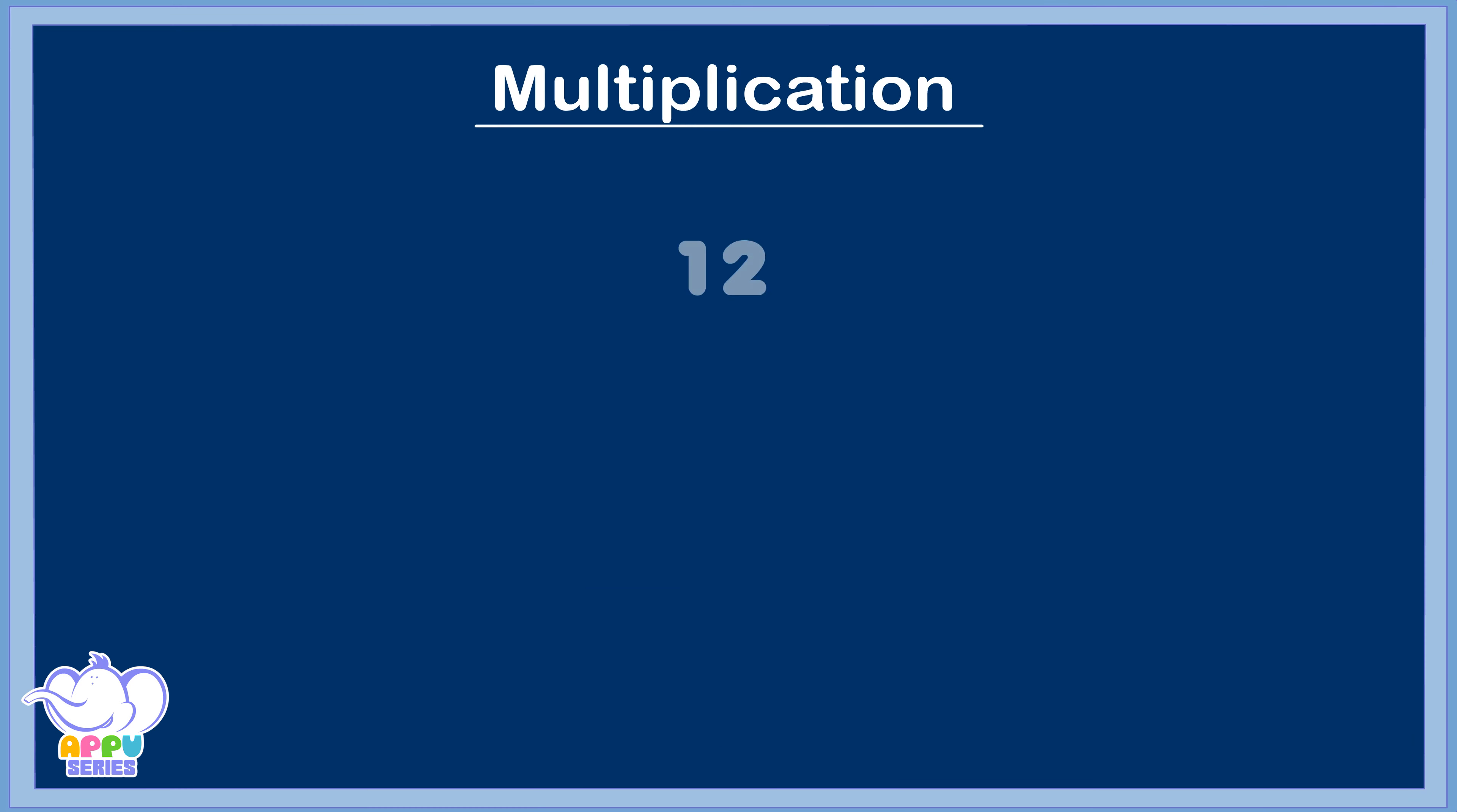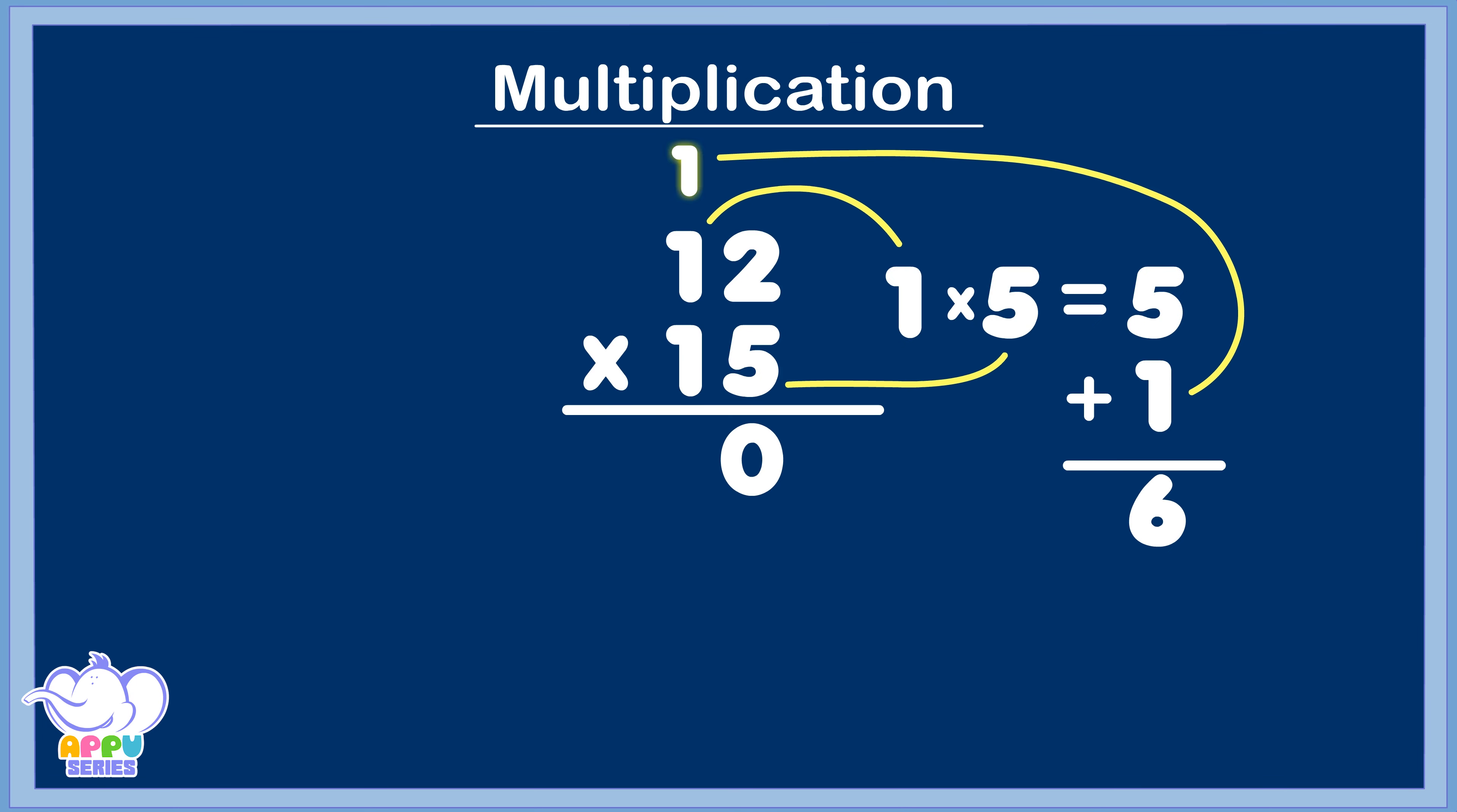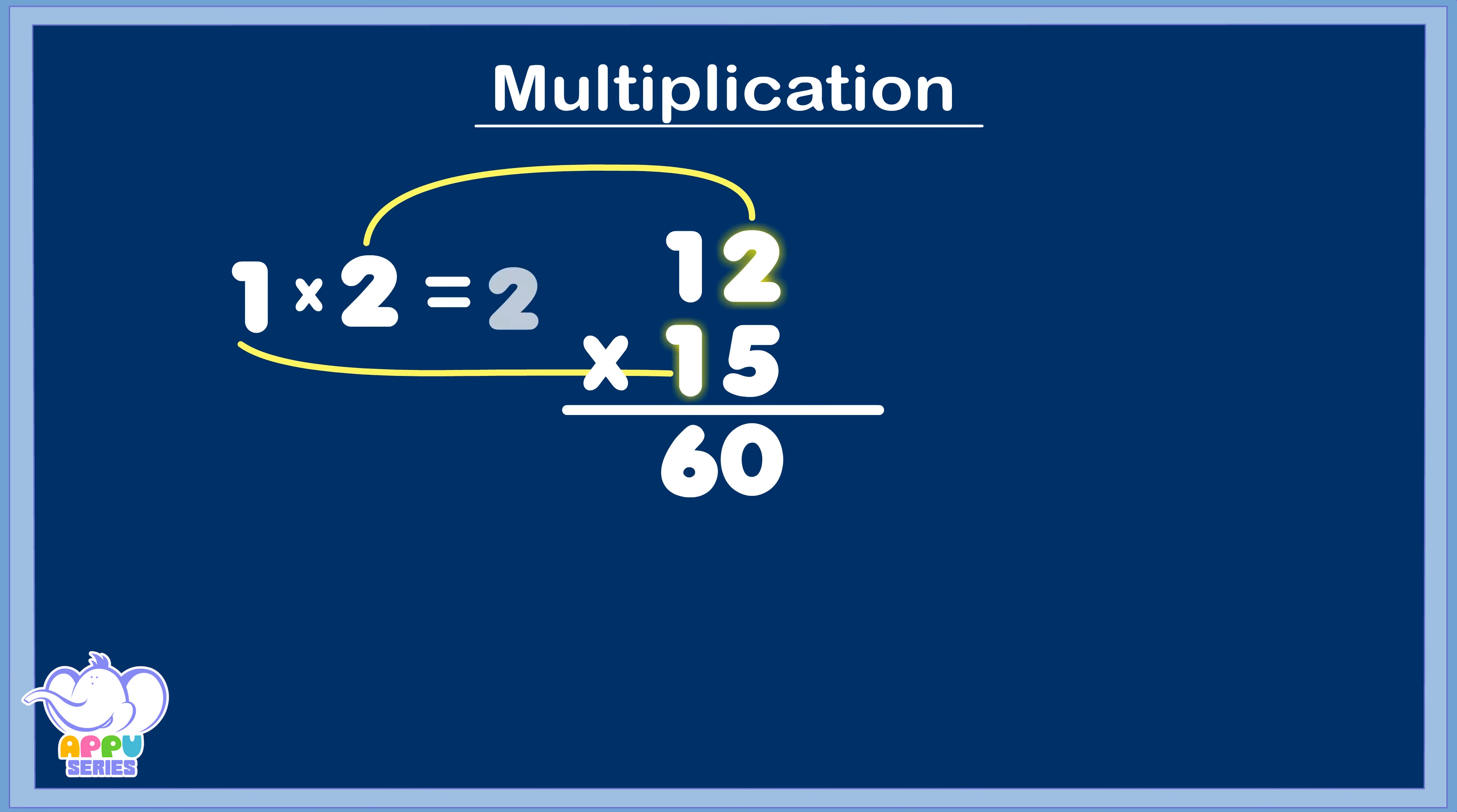Let's work out twelve times fifteen. Let's crack this. Five times two is ten. Check out what happens then. What comes below and what goes up. Down goes zero and one goes up. Five times one is five plus one is six. To the left of a zero, right at six. Once two is two and it goes under six. Once one is one and it goes to the left.